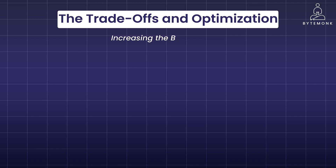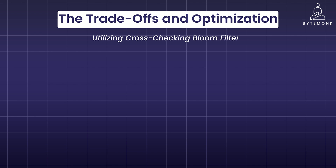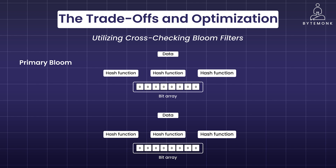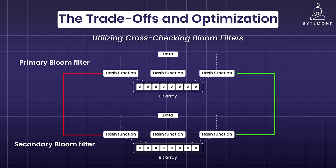Another method is to increase the size of the bit array. Expanding the size of the Bloom filter m is an effective way to lower the false positive rate, as a larger bit array provides more space for distributing hash function outputs, thereby reducing the chance of collisions. Finally, a novel approach involves using multiple Bloom filters to cross-verify results. When a primary Bloom filter returns a positive, secondary filters are queried. If these additional checks yield negatives, the initial positive can be deemed a false positive, enhancing accuracy without a large increase in memory usage.